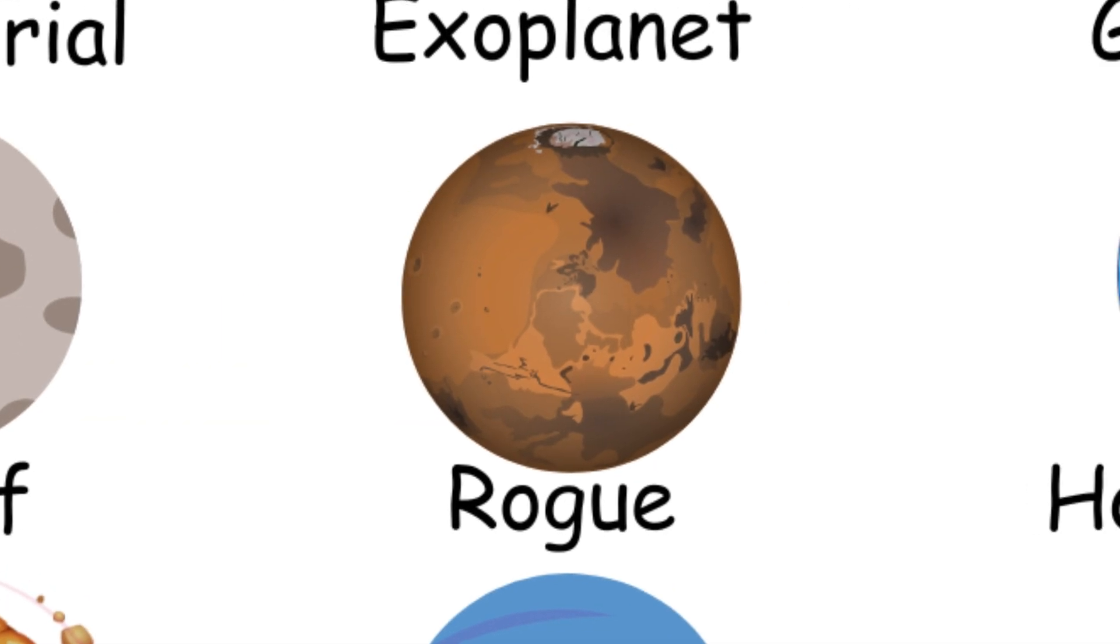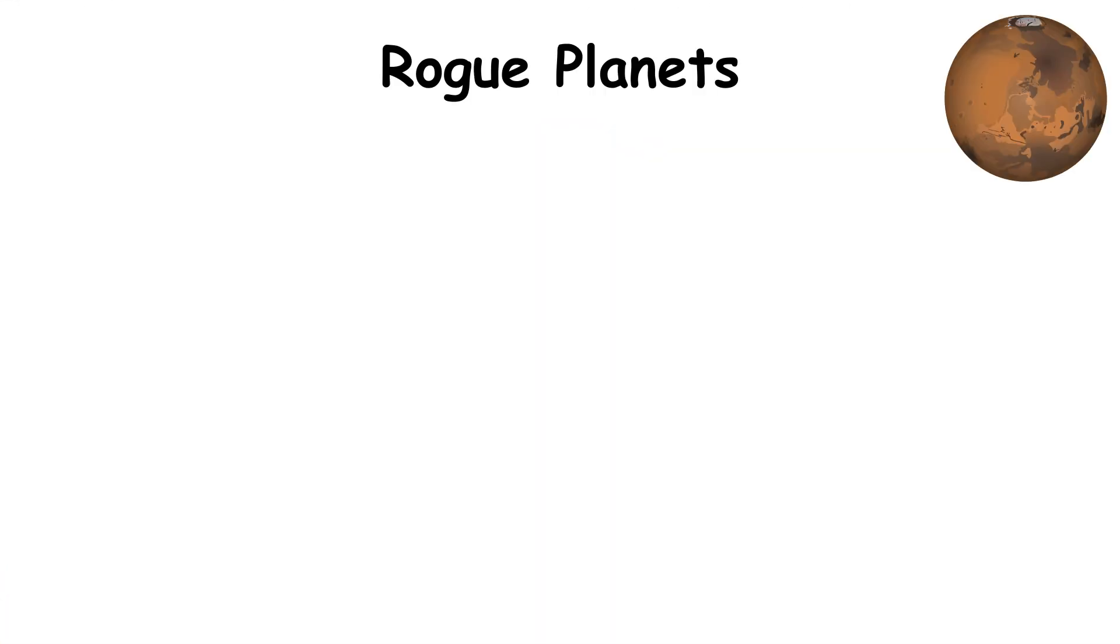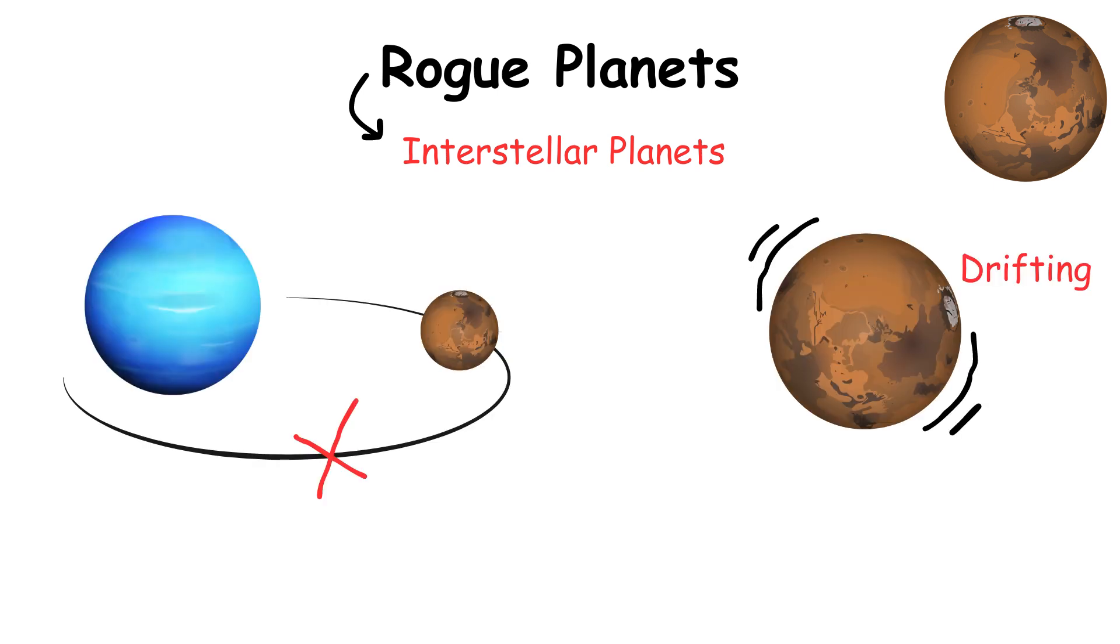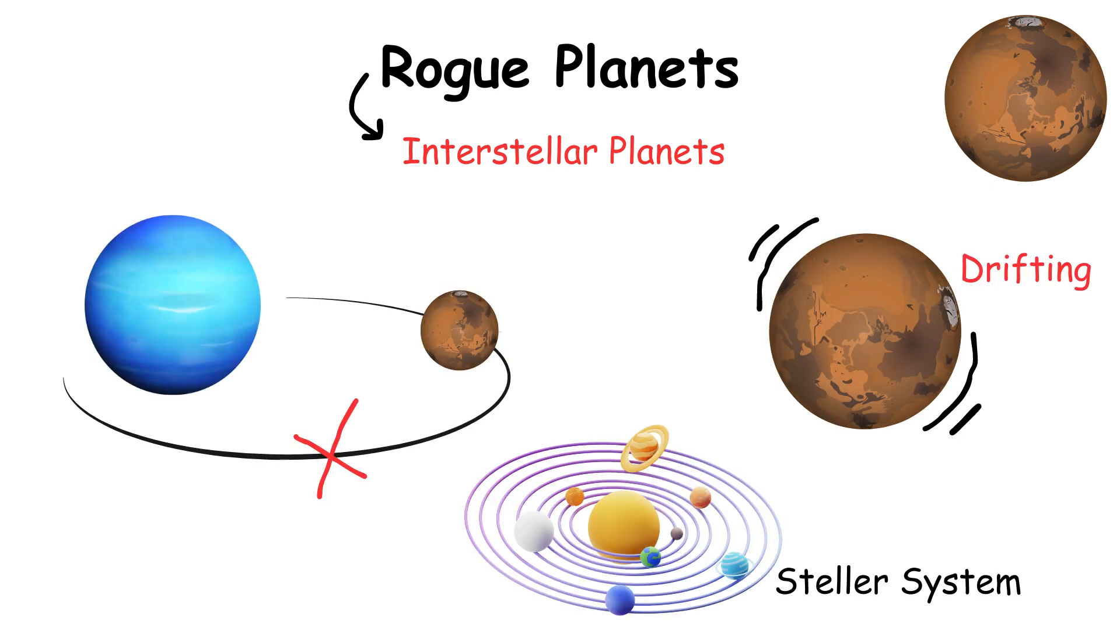Rogue planets, also known as interstellar planets, do not orbit any star. They drift through space, untethered to any stellar system.